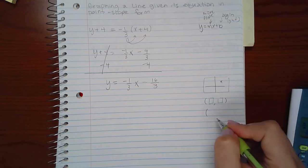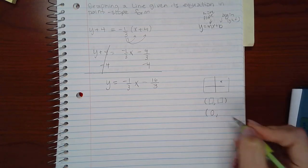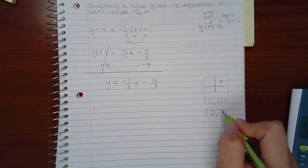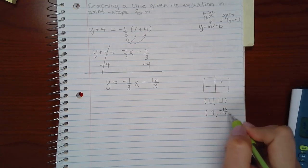Now because I'm talking about the y-intercept, the x-coordinate should be 0. The y-coordinate should be this value, which is negative 16 over 3.